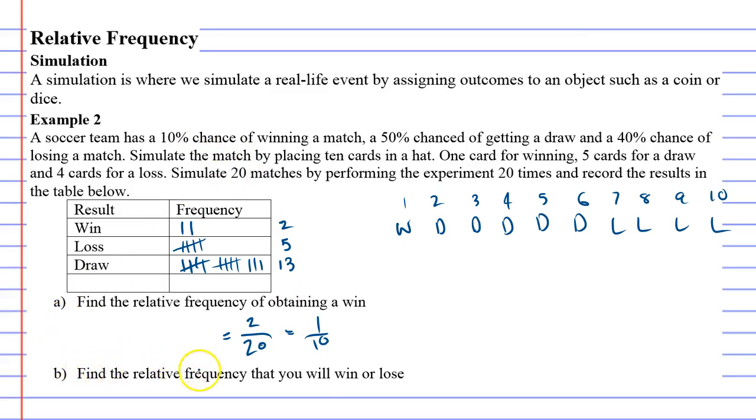Question B says: find the relative frequency that you will win or lose. We had two wins and five losses, so there were seven altogether where you either won or lost, out of 20.